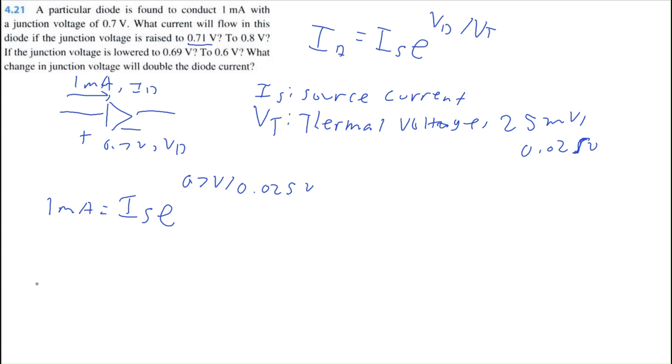Well, I don't know what current will flow, we're solving for that, so we'll just write Id for now. Is equal to Is, I still don't know what that is, times E to the power of our new junction voltage 0.71 volts divided by 0.025 volts. So how can I solve for Id? Well, I have an expression for Is right here.